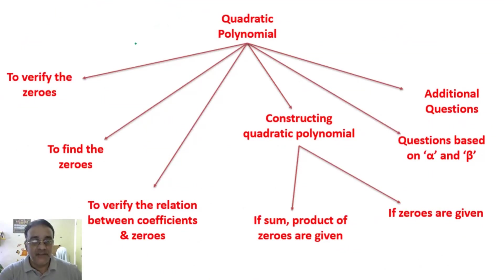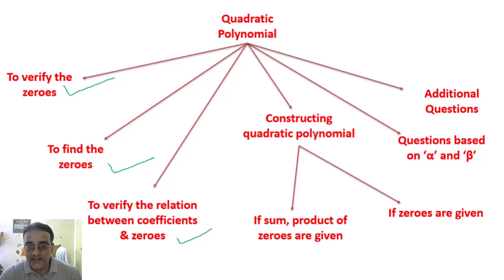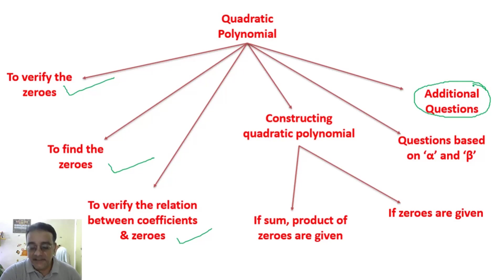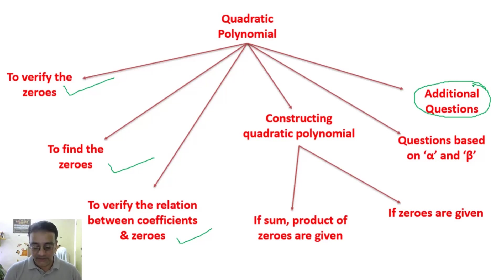We have already covered those three topics. Now we are going to complete constructing quadratic polynomial and questions based on α and β. I have also inserted one more section — additional questions — where I will tell you which type of question will come. So let us start with the first topic today: constructing quadratic polynomial.